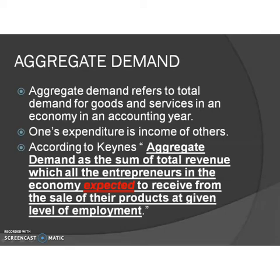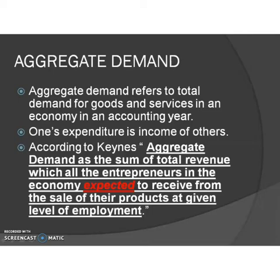We also studied that one's expenditure is another's income. The expenditure incurred by the household sector on the purchase of goods and services becomes the income of firms. The expenditure of firms on factors of production is the income of households. Students, recall the circular flow of income.